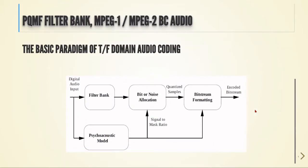Here we have a block diagram of the basic paradigm of time-frequency domain audio coding. We start with our digital audio input and we have two sections. First it goes to a filter bank, and also it goes to a psychoacoustic model. Then the output of the psychoacoustic model and the output of the filter bank go to a bit or noise allocation, and then it goes to the bitstream formatting, and the output will be the encoded bitstream.